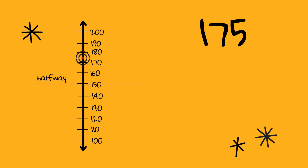Notice that 175 is not exactly on a tick mark. It's in between 170 and 180. What is the nearest 100 to 175? Find the point on the vertical number line. Is it halfway or above, or below halfway? 175 is more than halfway, so 200 is the nearest 100. We would round 175 to 200.